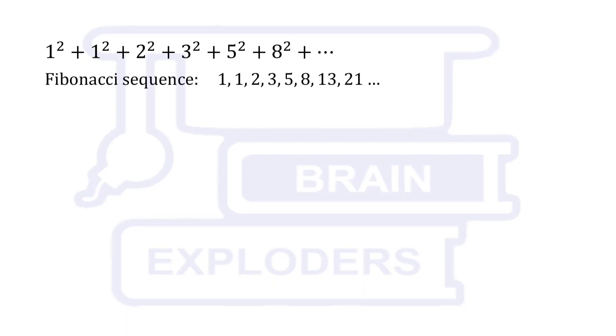In Fibonacci sequence, first and second term are 1 and every term after second term is the sum of previous two terms. For example, third term is 1 plus 1 that is 2, fourth term is 1 plus 2 that is 3, similarly other terms are 2 plus 3, 3 plus 5, 5 plus 8 and so on.